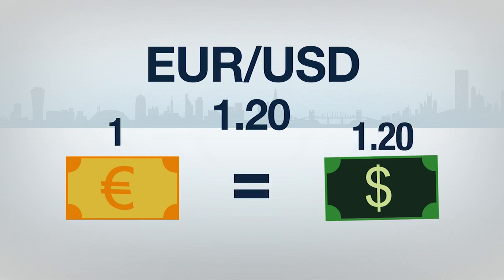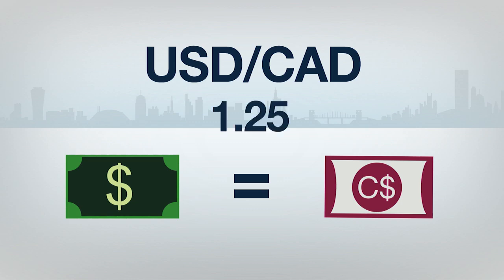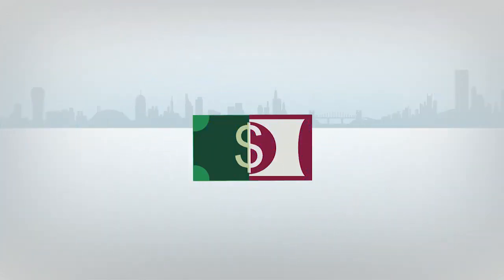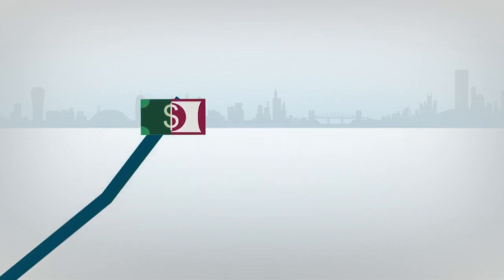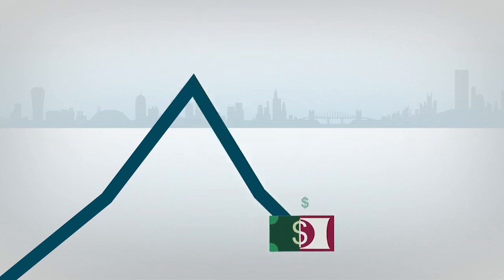Here's another example using the US dollar versus the Canadian dollar currency pair. If the USD-CAD is trading at 1.25, that means 1 US dollar is equal to $1.25 Canadian dollars. Even though there are two currencies involved, the pair itself acts like a single entity, similar to a stock or commodity. Investors profit when they buy a currency pair and its price increases, or profit if they sell or short a currency pair and the price decreases.